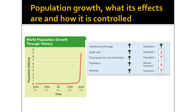You can see the factors that impact population on the right. Health care technology always drives populations up — as we improve health care, we're better at fighting diseases, so more people live longer. When the death rate goes up, population goes down, which makes sense. When food production goes up and we're able to distribute it better, we have an increase in population. Thinking back in history to the potato famine, population went down when there was less food. When population goes up, something always has to go down to keep the universe in balance.